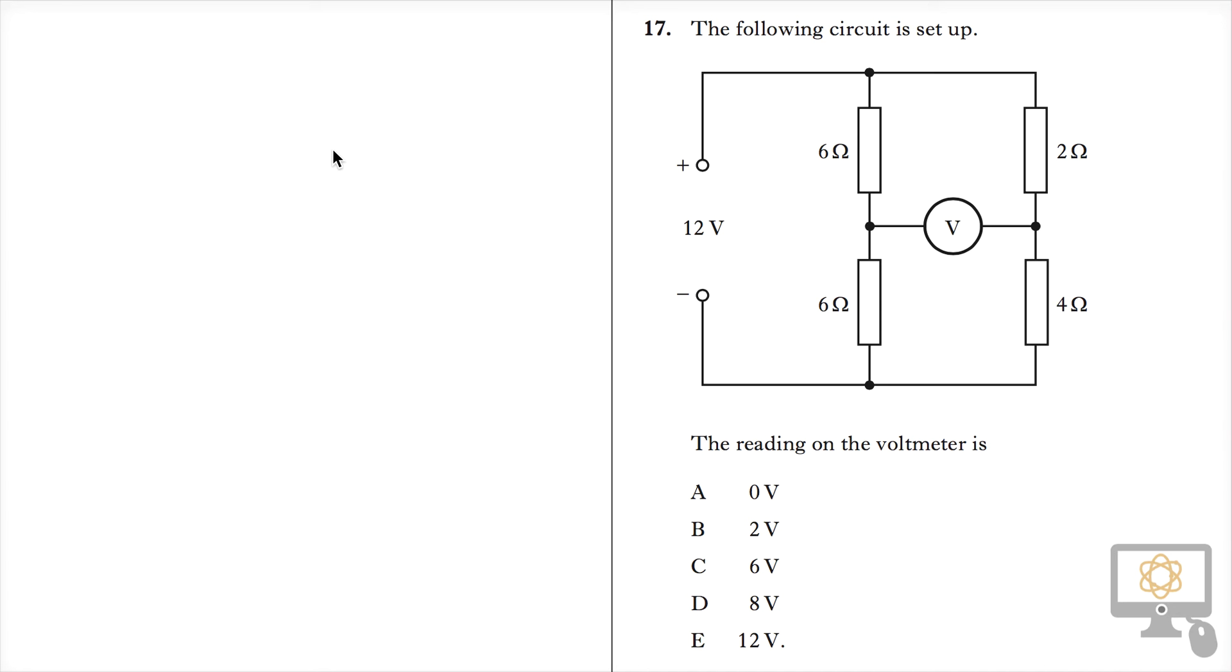Question 17 is a fairly typical potential divider question. It says the following circuit is set up and the reading on the voltmeter is one of these options. So what we need to determine here is what is the potential difference between this point in the circuit and this one over here.